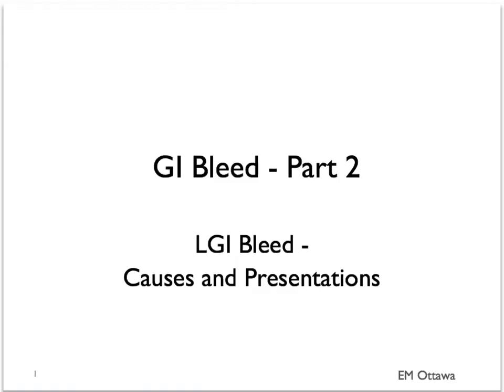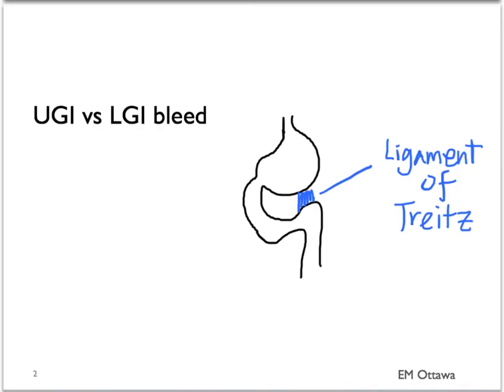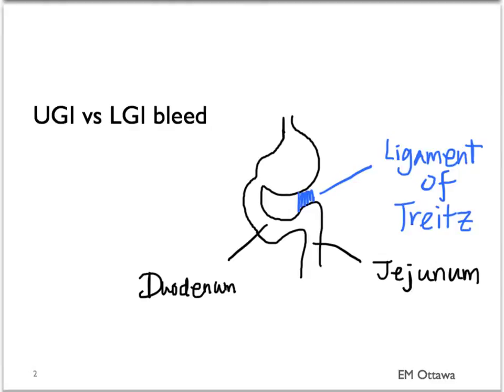Welcome back to emergency medicine video. In part two of GI bleed, we will discuss the causes and presentation of lower GI bleeds. Just to refresh your memory, the dividing line between upper and lower GI bleed is the ligament of Treitz that sits between the duodenum and the jejunum. Lower GI bleed is any bleeding that comes from the GI tract that is distal to the ligament of Treitz.